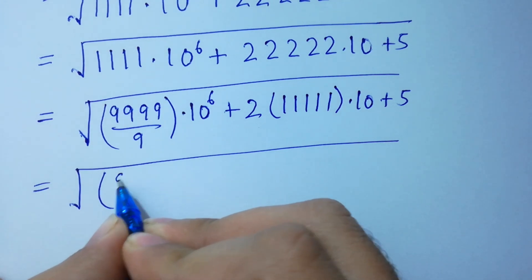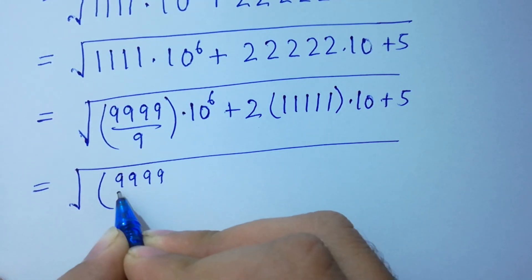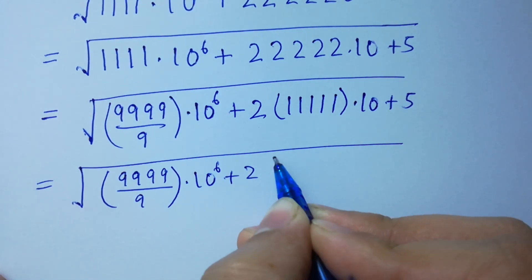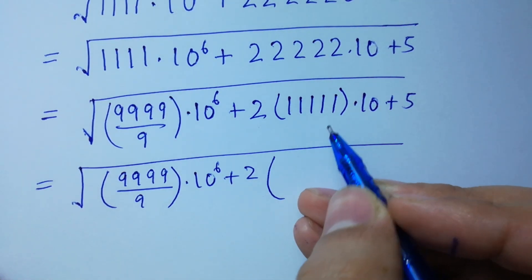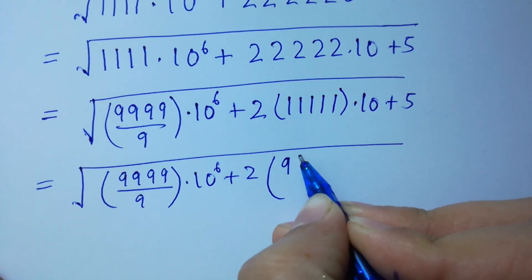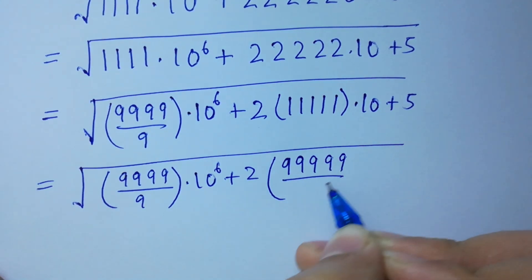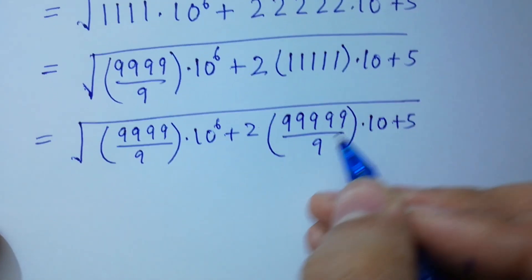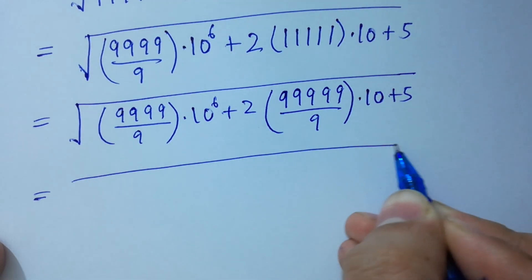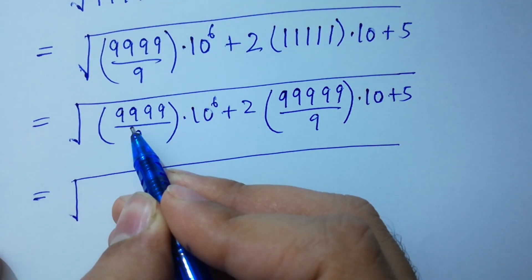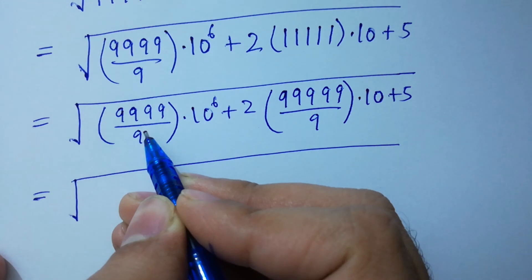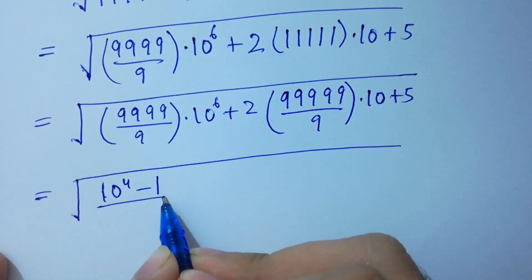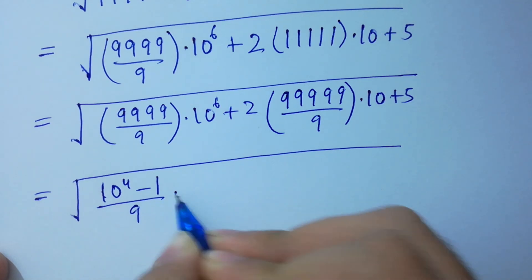Next, 4 times 9 over 9 times 10^6, plus 5 times 1^5 over 9 times 10 plus 5. And 4 times 9 is the same as 10^4 minus 1 over 9, times 10^6.